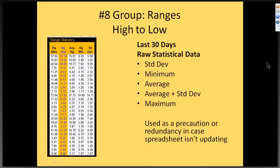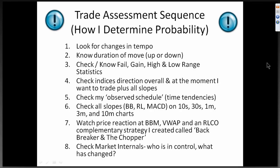Now we're going on to range statistics — it's just the range of the high to low. Also set up like gain stat and fail stat. The reason I have this particular grouping on my spreadsheet is I use it as a redundancy in case the spreadsheet isn't updating. If you've ever worked with XLQ, sometimes it loads slowly or it might get a glitch. And then at least I have this raw statistical range in front of me that I can add up in my head quickly or use a calculator if I need to.